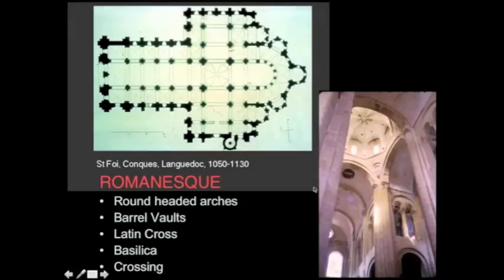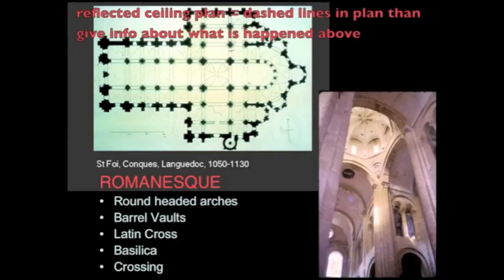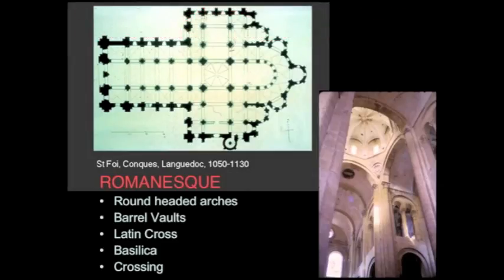This is Saint-Foy in Conques, which we've looked at before. Again, we have barrel vaults, a Latin cross plan — it's a basilica — and we have a crossing that also gets celebrated here. There's an octagon imposed within the crossing, representing the reflected ceiling plan. Something is happening above that creates an octagonal space — probably some kind of octagonal dome stuck inside the crossing. And indeed we can see it right here: there's this little octagonal dome at the crossing to mark the importance of those two elements coming together.